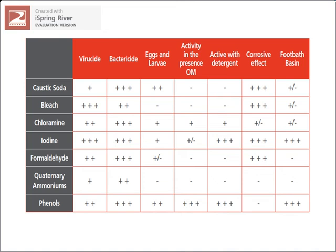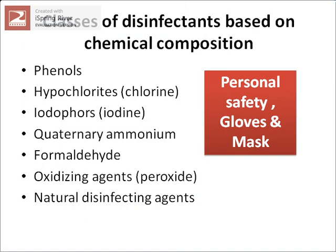A table shows different disinfectants used in the poultry sector with their characteristics. For example, phenol has virocidal and bactericidal effects, is active against eggs and larvae of parasites, is active in the presence of organic matter, is compatible with detergents, does not have aggressive effects, and can be used for foot baths.